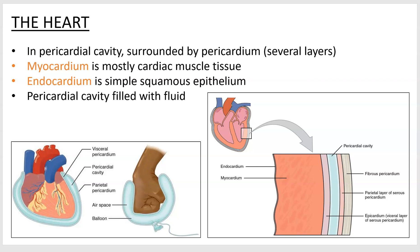These images show the pericardial cavity, which is the cavity closest to the heart. If you look at this image of a hand punching a balloon, the hand is touching one part of the balloon, but the balloon continues around to form an outer layer as well, with an airspace in between. Inside your body, you have a pericardial cavity — it doesn't have air, but it has pericardial fluid, which acts as a lubricant and support for the heart.